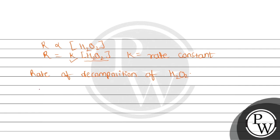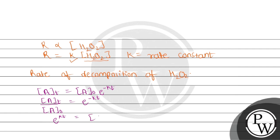To find the concentration of H2O2, we can use the integrated rate law, which states that the concentration of the reactant at time t is equal to the initial concentration of the reactant multiplied by exponential raised to negative kt. Rearranging this, we get concentration at time t divided by initial concentration equals e raised to negative kt. If we invert this, we get e raised to kt equals initial concentration divided by concentration at time t.